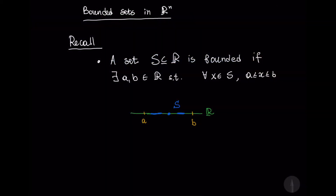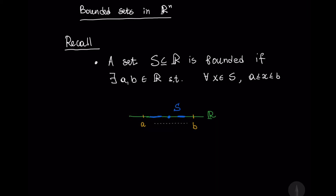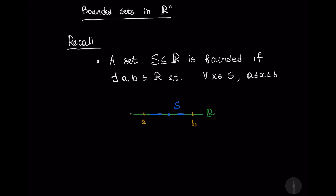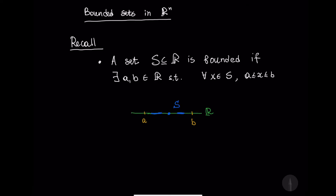Let us recall that a set S, that is a subset of real numbers, is bounded if there exist two real numbers A and B such that every element of S is between these two numbers A and B. Here we see a set S depicted in blue, bounded by two numbers A and B. Basically, every set of real numbers that is inside some finite interval is bounded.